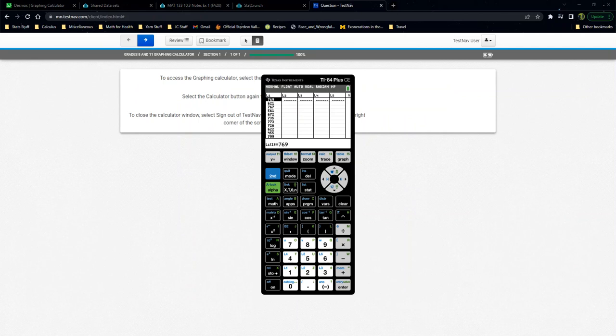I have all the values typed in. Now just like them, you have to do stat and then calculate and then one variable. List one, no frequency list, calculate and there's your x-bar at the top which is 634.6 and there's your s which is 112.6. So it'll find them but you have to put all the values in and do it.